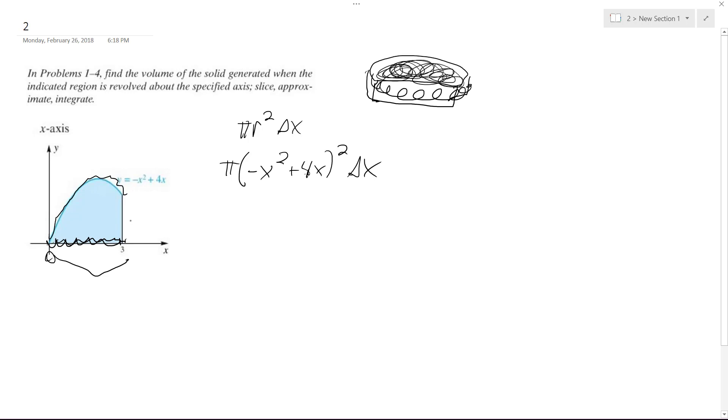So next up we're going to integrate. Integrating from 0 to 3, negative x² plus 4... I got to multiply this out. So we end up with x⁴ - 8x³ + 16x² dx.